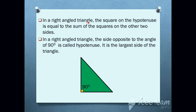In a right-angled triangle, the square on the hypotenuse is equal to the sum of the squares on the other two sides. In a right-angled triangle, the side opposite to the angle of 90 degrees is called the hypotenuse. It is the larger side of the triangle.